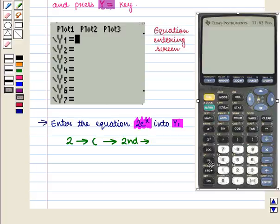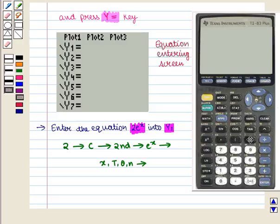Followed by the e^x key, and then we press X,T,θ,n key for x, and then press the closing round bracket key twice.